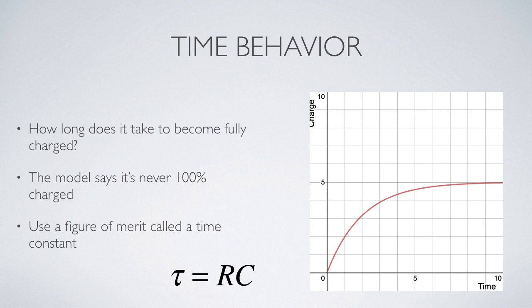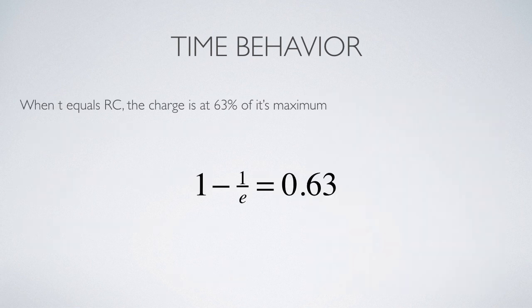If you examine the units of resistance and capacitance, you'll find that their product simplifies to seconds — try to verify that on your own. When the time equals RC, the charge will be 63% of its maximum value. At that moment, the argument of the exponential is −1, so e^(−1) is about 0.37, and therefore 1 − e^(−1) is about 0.63, or 63%.